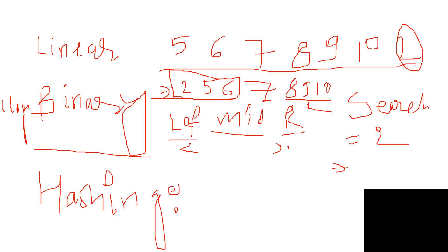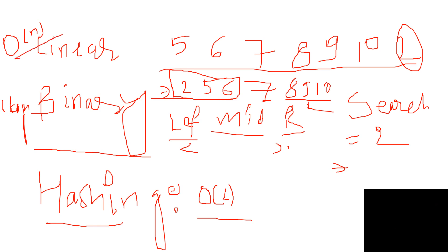The linear search time complexity is O(n), binary search is O(log n), and hashing is O(1) — constant time. Out of these three, hashing is the best. For example, if your data size is one crore, linear search takes one crore seconds, binary search takes log n time, but hashing takes just one second to find the element.